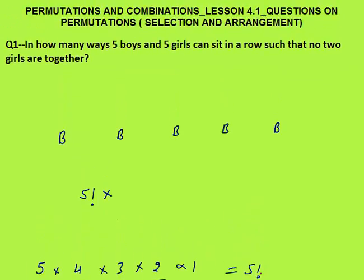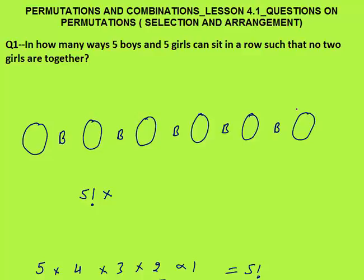The question was that no 2 girls are together, so the girls' places are the circles — the spaces between and around the boys. If girls come in these circles, they will never be together; they will always be between the boys. How many place choices do we have for girls? We have 6 circles. So we have 6 options for girls to sit, but the number of girls is only 5. So we need to select 5 seats out of these 6 seats where girls can sit. 5 seats can be selected in 6C5 ways.